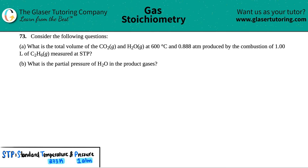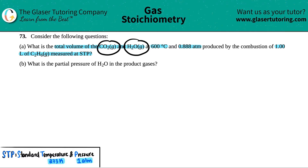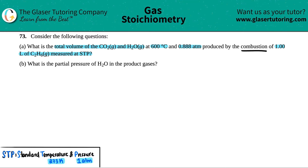Number 73, consider the following questions. Letter a: what is the total volume of the CO₂ gas and the H₂O gas at 600 degrees Celsius and 0.88 atm produced by the combustion of 1.00 liters of C₂H₆ measured at STP? They want to know the total volume of carbon dioxide and water. Since we're given information about one compound and want information about others, the first thing we need is the balanced equation. This is a combustion reaction, so it's a hydrocarbon plus oxygen giving CO₂ and water — that's the standard combustion equation.